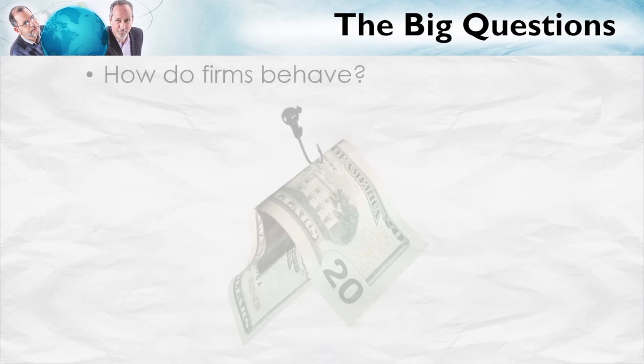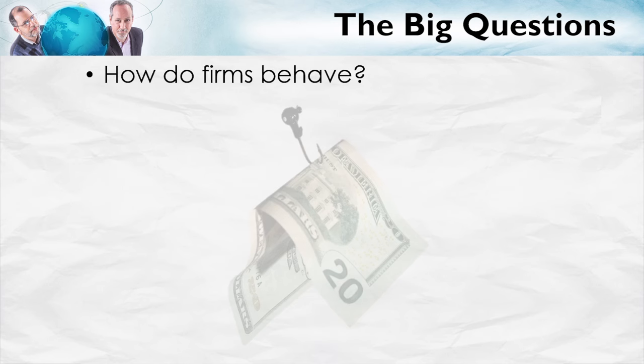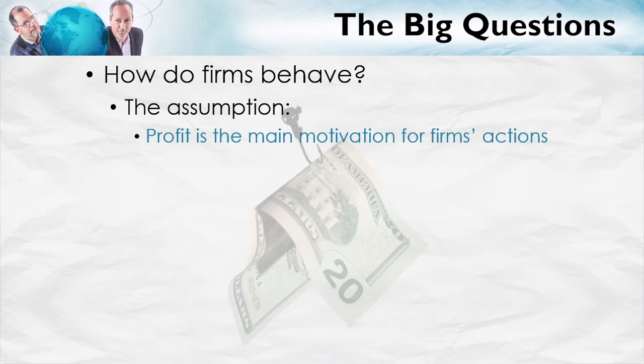The key question that we want to answer is: how do firms behave? A guiding assumption is that profit is the main motivation for a firm's actions. Now, this is not literally 100% true. Nevertheless, for most firms most of the time, profit is going to be a key motivator. For firms with a lot of competitors, competition alone is going to compel them to maximize profit, because firms with a lot of competitors that don't maximize profit are going to be out of business pretty quickly.